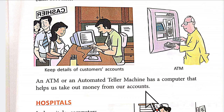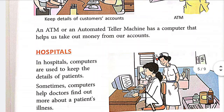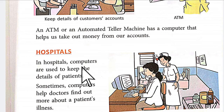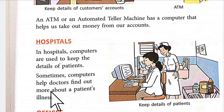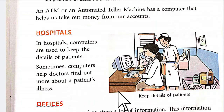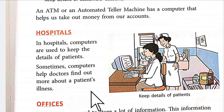The ATM machine has a computer that helps us take money out from our account. The next area is the hospital. In a hospital, computers are used to keep the details of patients. Computers also help doctors find out more information about a patient's illness and the level of disease, and assist with finding the right treatment.